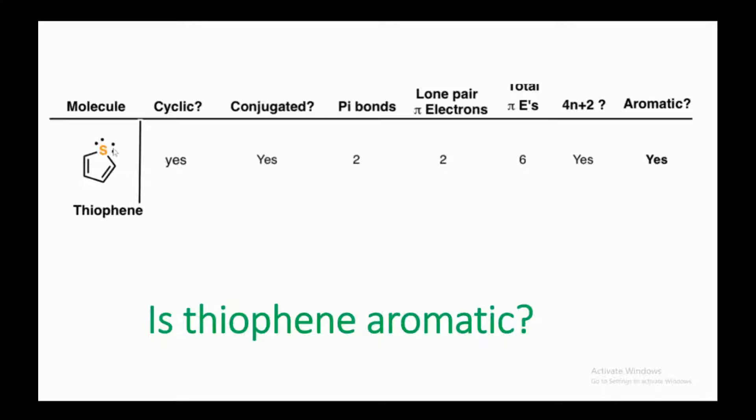Why? Because out of the four pi electrons, only two pi electrons are involved in delocalization and conjugation. Hence, there are two lone pair pi electrons involved in resonance. Now, how many total pi electrons?